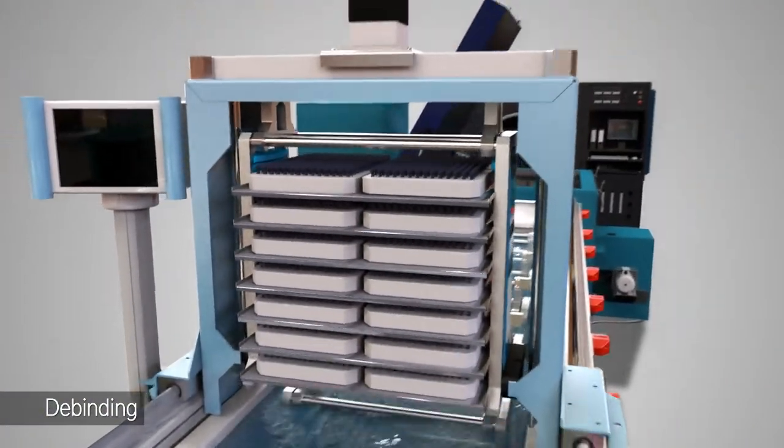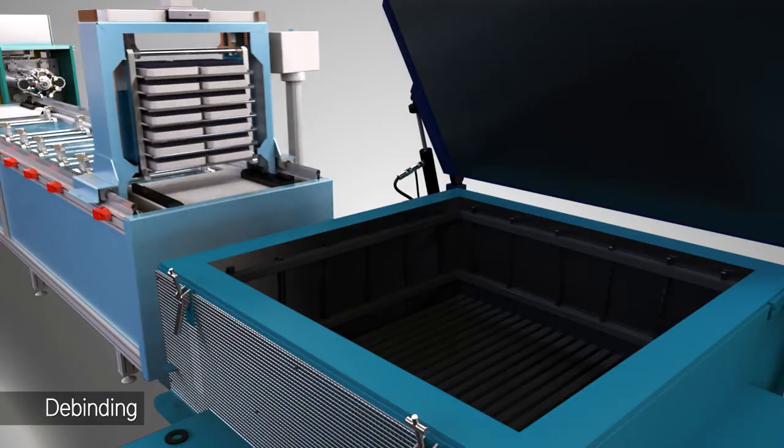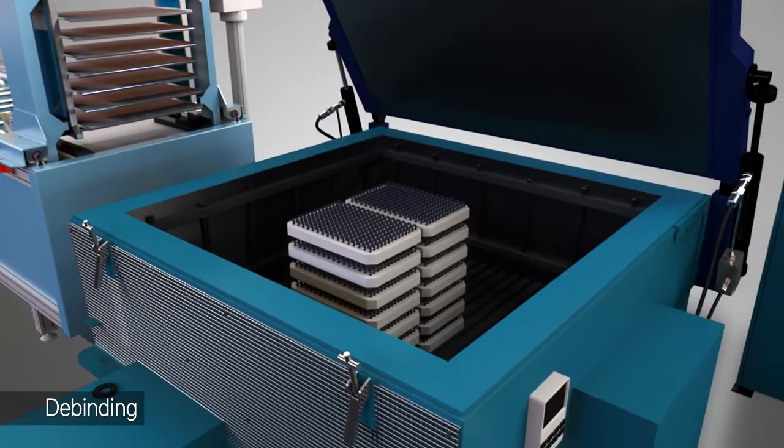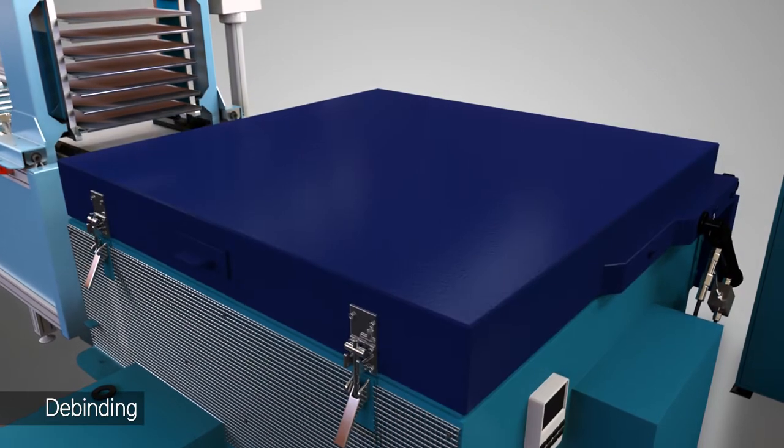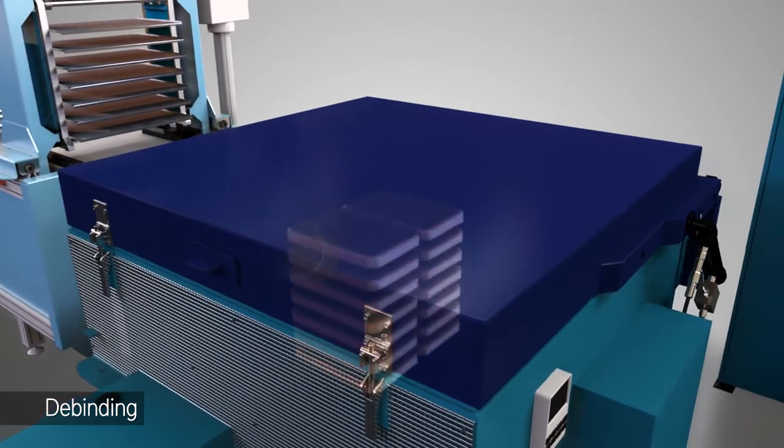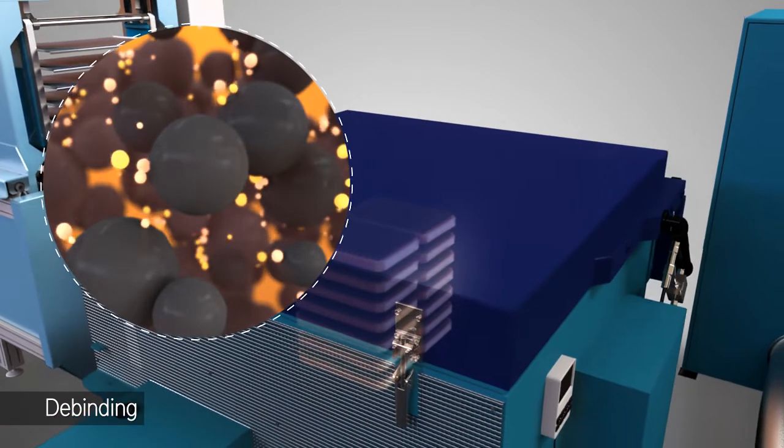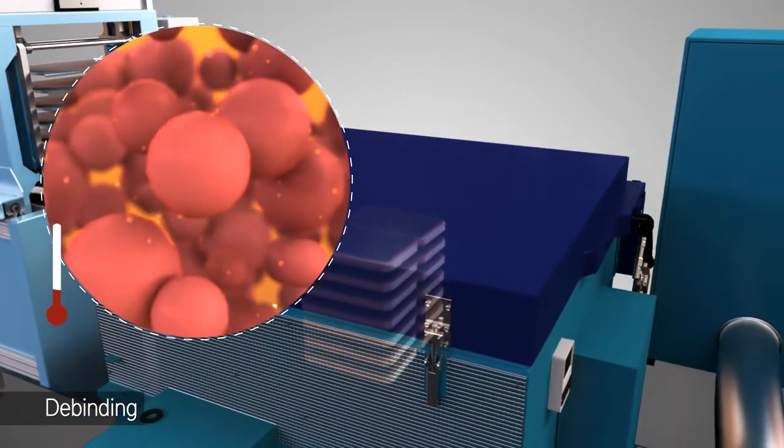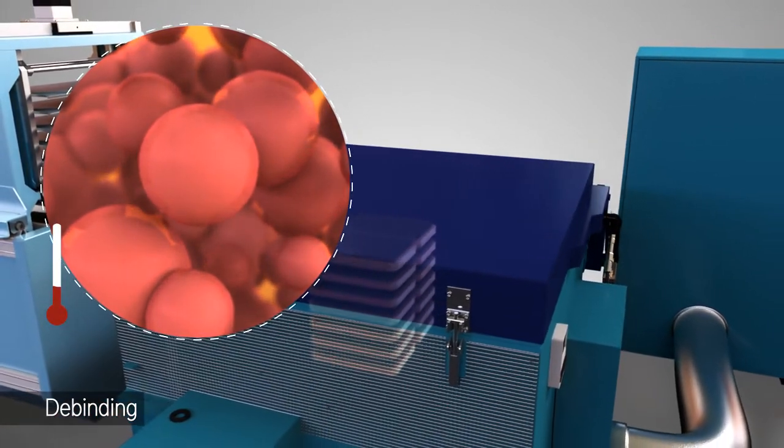The next step is to complete the de-binding process in a de-binding furnace. Denkom MIM uses a different furnace for the thermal de-binding phase instead of de-binding in the sintering furnace. The rest of the binding materials are burned away at a relatively low temperature in this furnace.